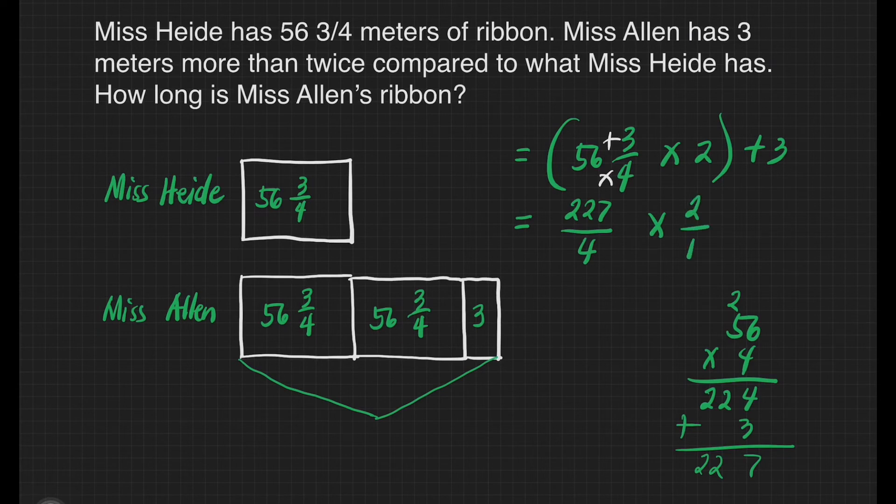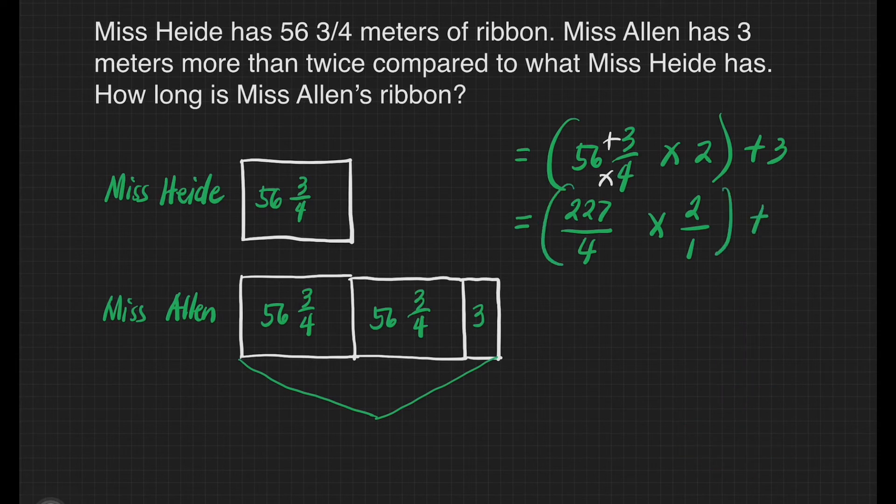Because any whole number has a denominator of 1. We will copy our plus 3 here. Next, we're ready. Is there something that we can cancel? Yes, we have 4 and then 2. What number can we divide both 2 and 4? That's 2. 4 divided by 2 is equal to 2. 2 divided by 2 is equal to 1.